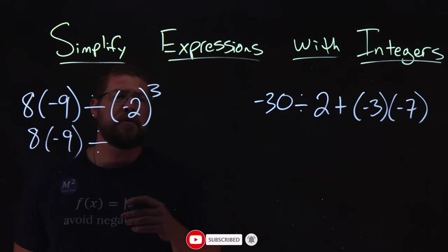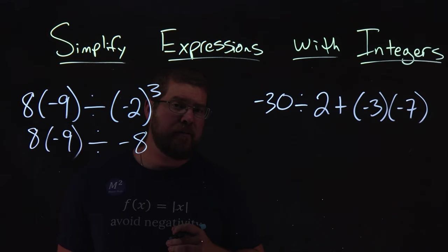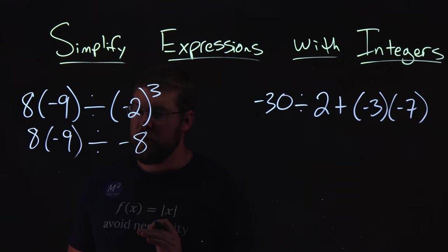and negative two to the third power comes out to be a negative eight. Remember, it's negative two times itself, three times.